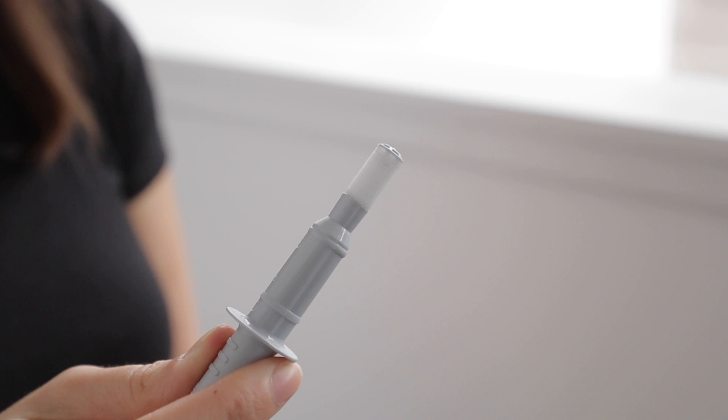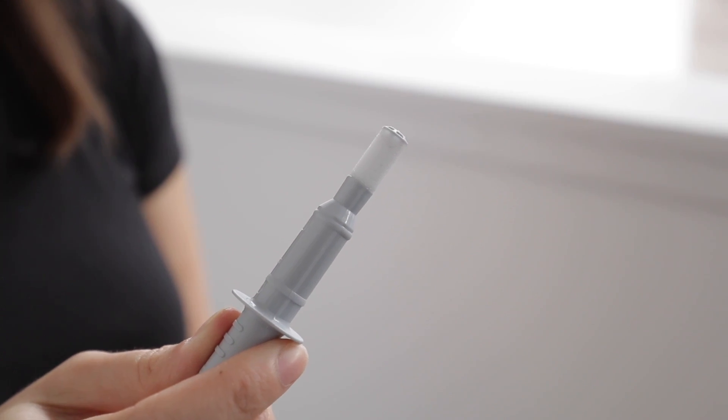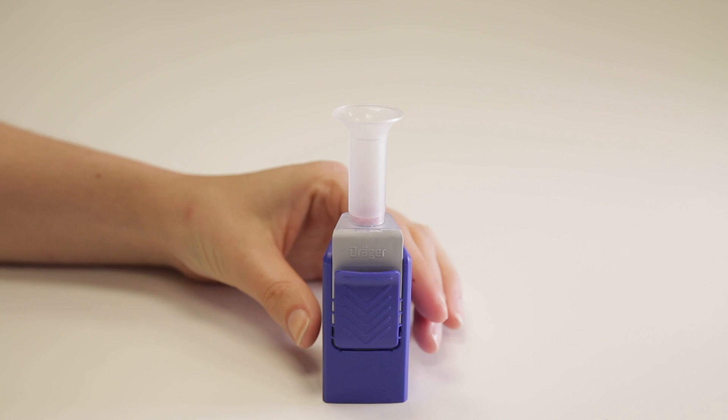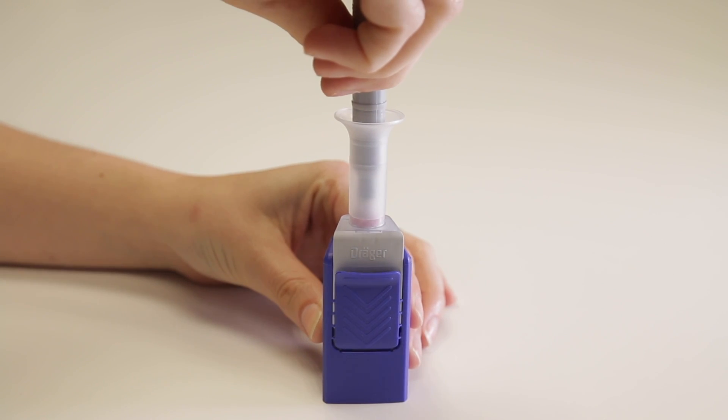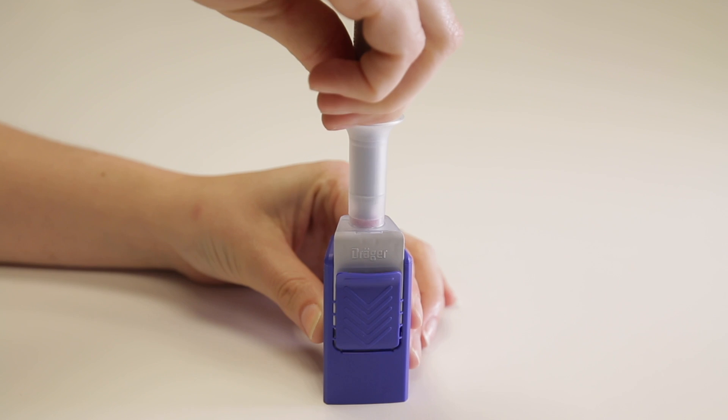Once the red ring on the sampler starts to discolor you can remove it. Now push the sample into the funnel on top of the test cassette. The vial inside the cassette which houses the buffer solution should break.